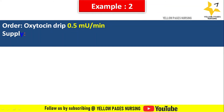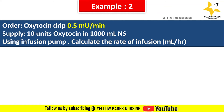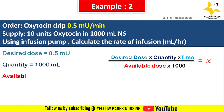Let's move to the next example. Doctor's order reads: oxytocin drip 0.5 milli-unit per minute; supply 10 units oxytocin in 1000 ml NS using an infusion pump; calculate the rate of infusion in ml per hour. The formula is: desired dose × quantity × time ÷ (available dose × 1000) = x. Here the desired dose is 0.5 milli-unit, quantity is 1000 ml, and available dose is 10 units.